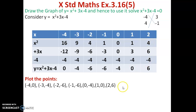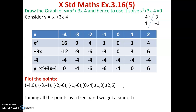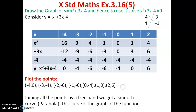After finding all 7 points, you have to plot the points and join them by freehand, and you will get a smooth curve. It is called a parabola. Now we move to the graph to draw the parabola.